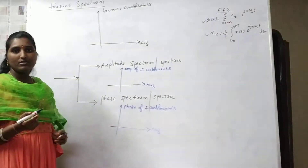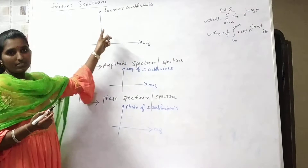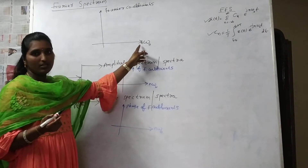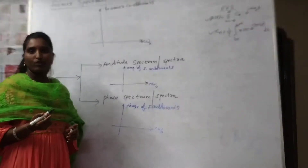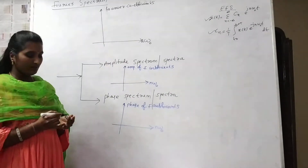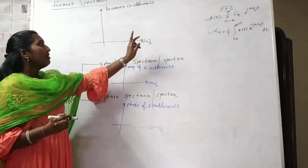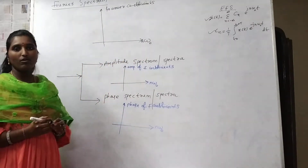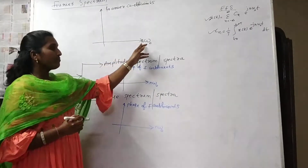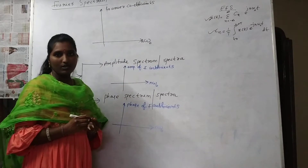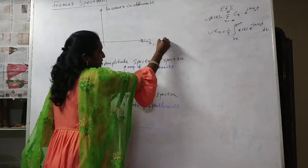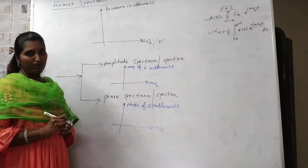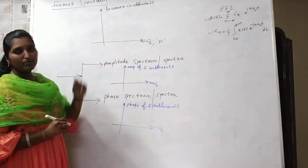Fourier spectrum: for a periodic signal, if you want to draw a Fourier spectrum, you have to consider on the x-axis its frequency, and on the y-axis its Fourier coefficients. If a plot is drawn between angular frequency and the Fourier coefficients, then that plot is called Fourier spectrum. On the x-axis it is n·ω₀, and n will take only integer values. That's why your Fourier spectrum is in discrete form, not continuous.